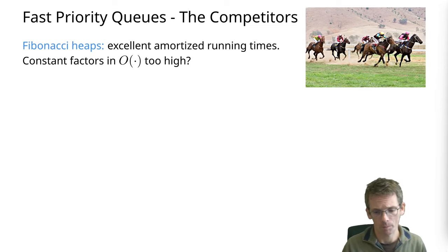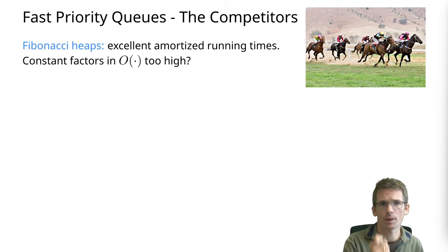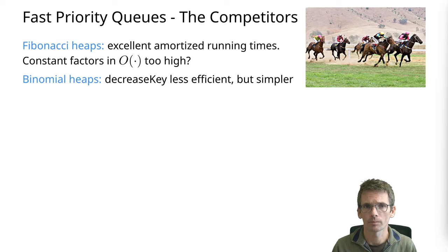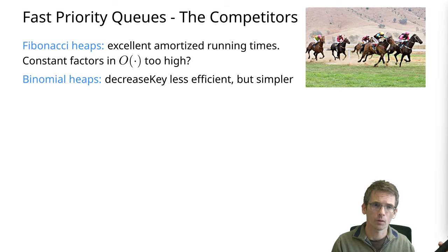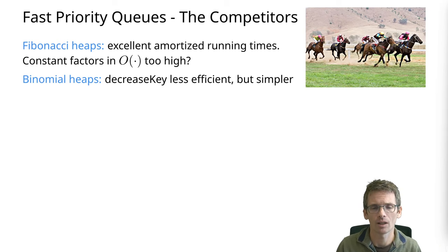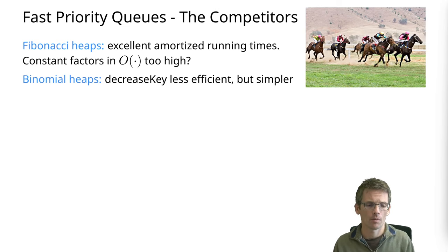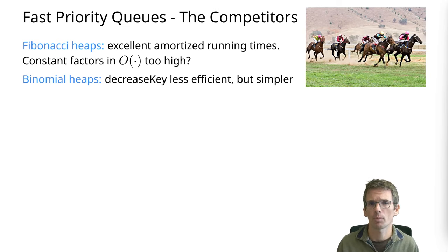So let's see what competitors we have. We have Fibonacci heaps, obviously. Then binomial heaps — very similar to Fibonacci heaps. The decrease-key operation is less efficient, but the simplicity might make it better in practice.